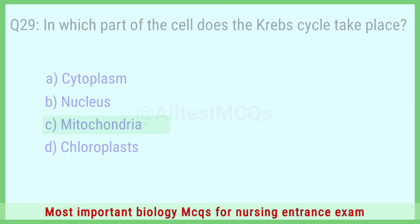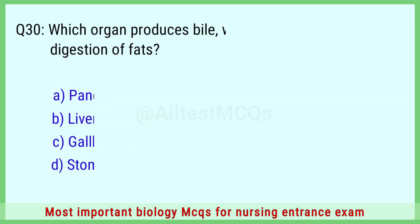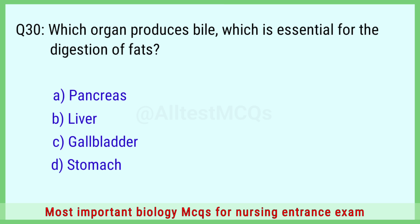Question number 30: Which organ produces bile, which is essential for the digestion of fats? The correct answer is option B: liver.